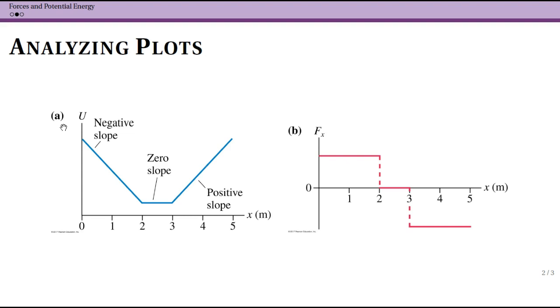If we look at this piecewise potential energy curve, we see that we have a constant negative slope, a constant zero slope, and then a constant positive slope. So we take the derivative and we use a minus sign.